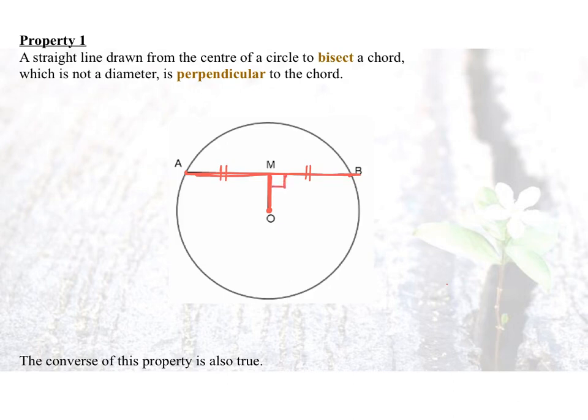The converse of this property is also true, meaning if OM and AB are perpendicular to each other, that means AM will be equal to MB. It will cut the chord into two equal halves.